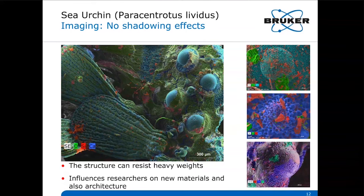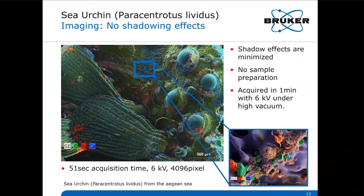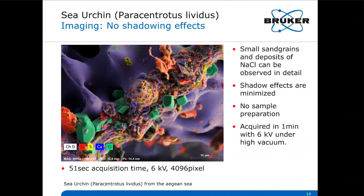Detailed maps can be acquired to observe even finer structures and features. In this case, crystallization of small sand grains precipitating out of the water can be observed on top of the sea urchin skeleton. The shadow effects are minimized due to the four SDD segments sitting on top of the sample and looking from all directions, and this also brings advantages when acquiring spectra from topographic samples.